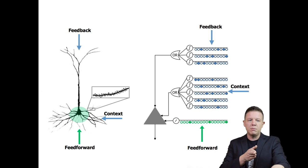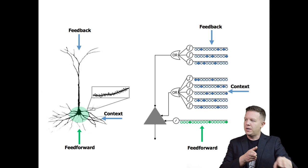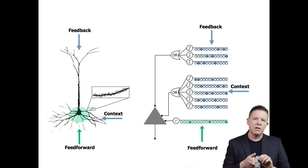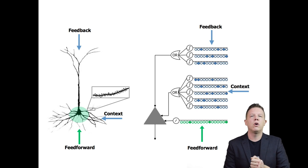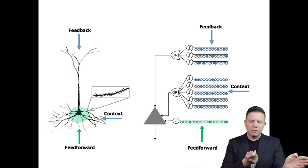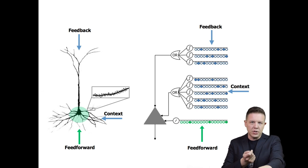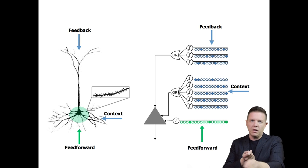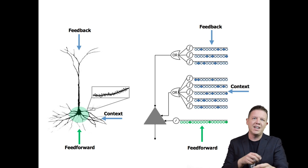Each one of those cells may be in an on or an off state. So at any time, if a cell wants to decide whether it's going to go into a predictive state or not, it can look at all of its segments and its connections across all of their synapses.